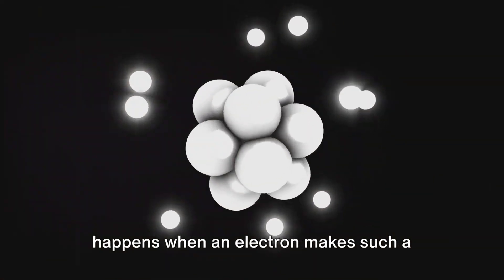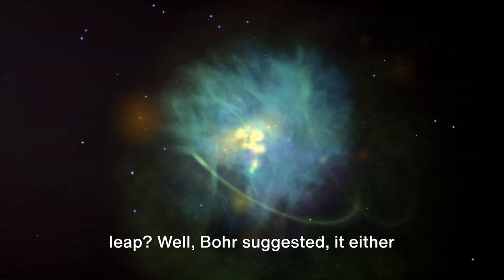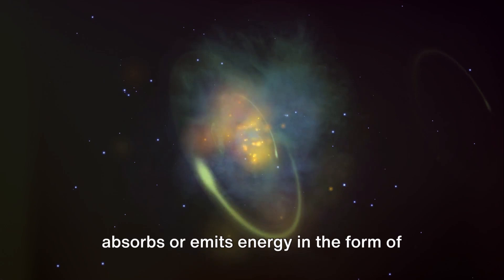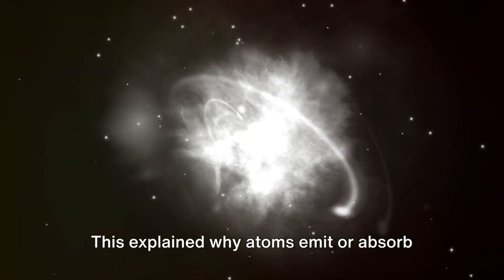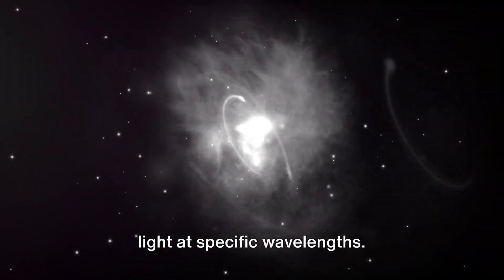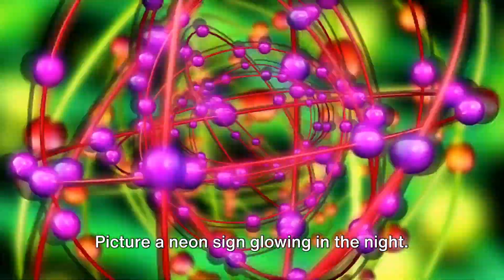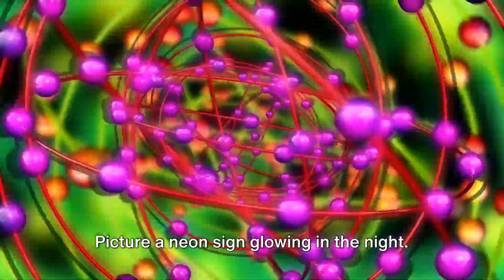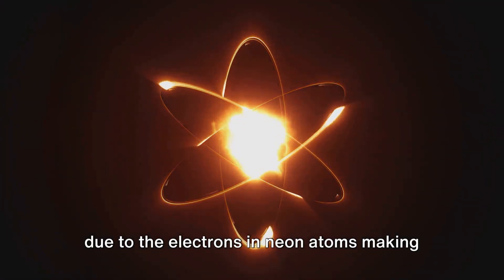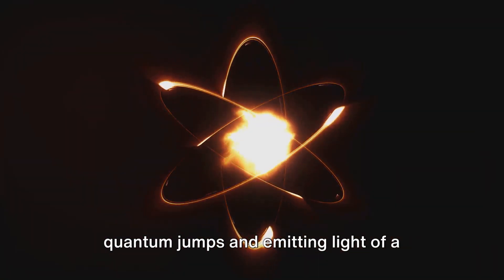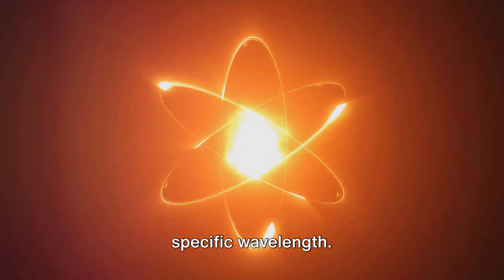But what happens when an electron makes such a leap? Well, Bohr suggested it either absorbs or emits energy in the form of electromagnetic radiation. This explained why atoms emit or absorb light at specific wavelengths. Picture a neon sign glowing in the night, that distinct red-orange color. That's due to the electrons in neon atoms making quantum jumps and emitting light of a specific wavelength.